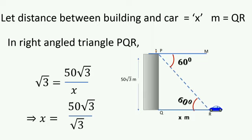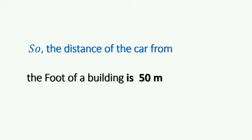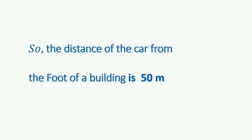It implies that x equals 50√3 by √3. This goes here, this comes here. √3 and √3 cancel, so the answer is 50 meters. Therefore, the distance of the car from the foot of the building is 50 meters.